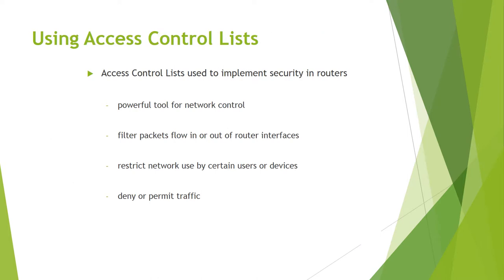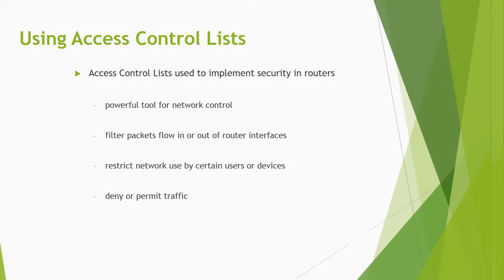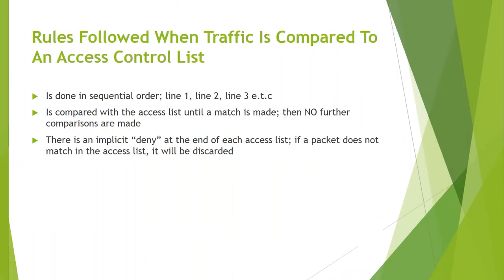Access Control Lists are used to implement security in routers. They are a powerful tool for port and network control, used to filter packet flow in or out of router interfaces, restrict network access by certain users or devices, and deny or permit traffic. Traffic is compared to an access control list to determine if it should be allowed or denied.